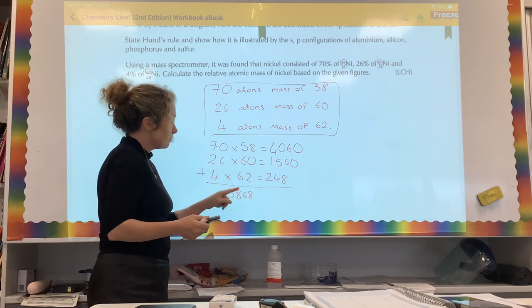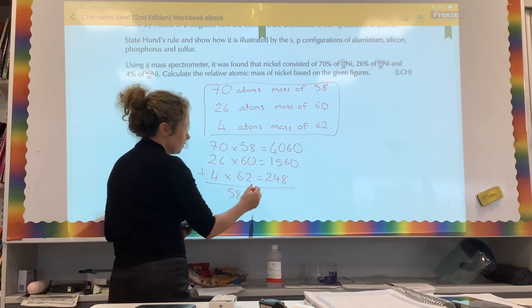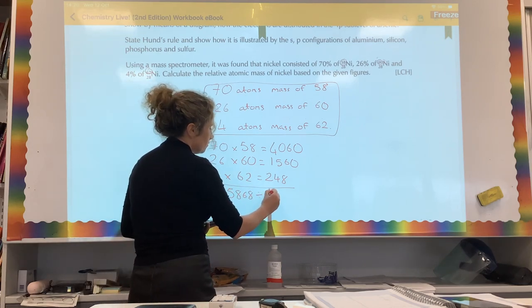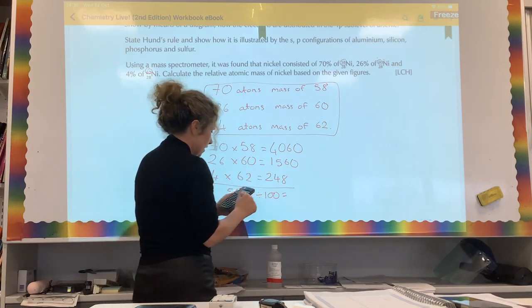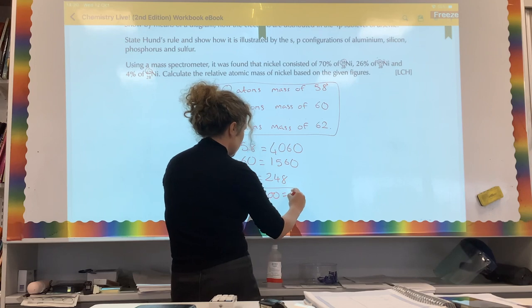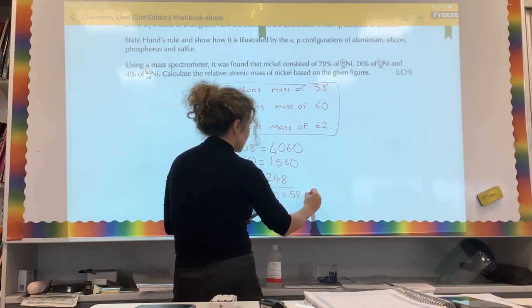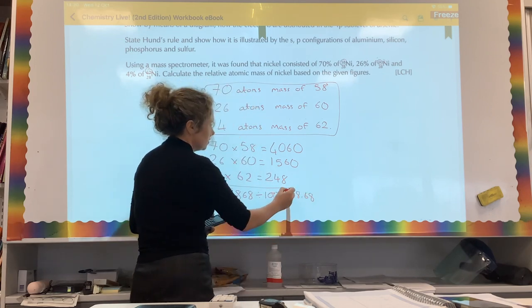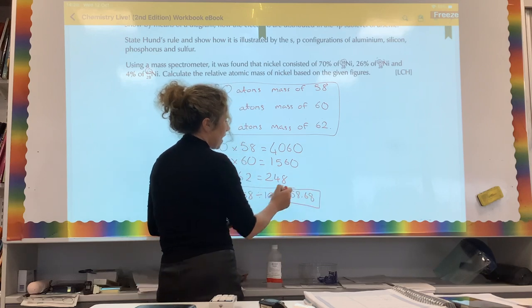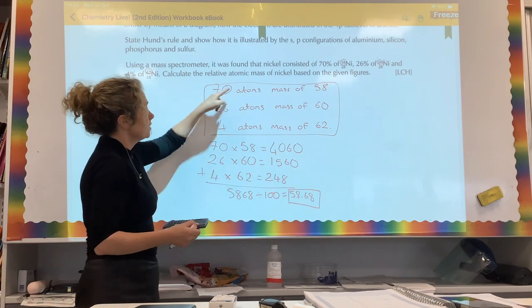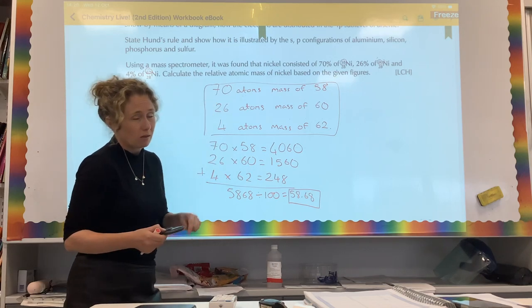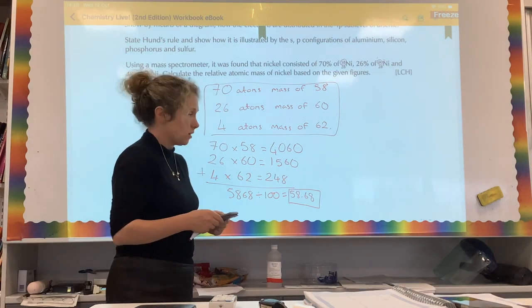And that is equal to 5,868. That's the average, that's the mass of 100 atoms. We need to find out the mass of 1, so we divide that number by 100, so that is going to be 58.68 atomic mass units. So that is your answer there. That's the average mass of one atom of nickel, taking into account its abundance of isotopes on a scale where carbon-12 has a mass of 12 atomic mass units.